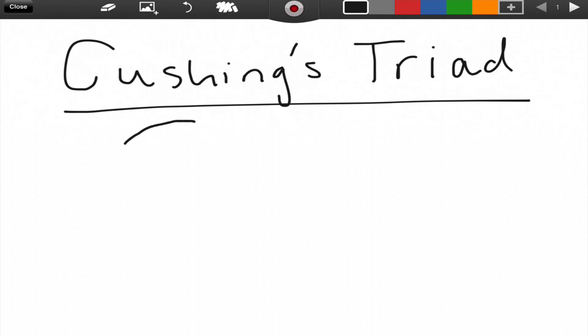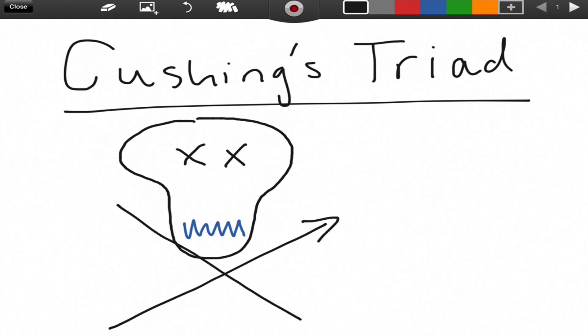So first draw something that kind of resembles a skull, and then put a squiggly line for the mouth, and then do what would be the crossbones by drawing a couple arrows, and I want you to label the one going up as blood pressure and label the one going down as heart rate.